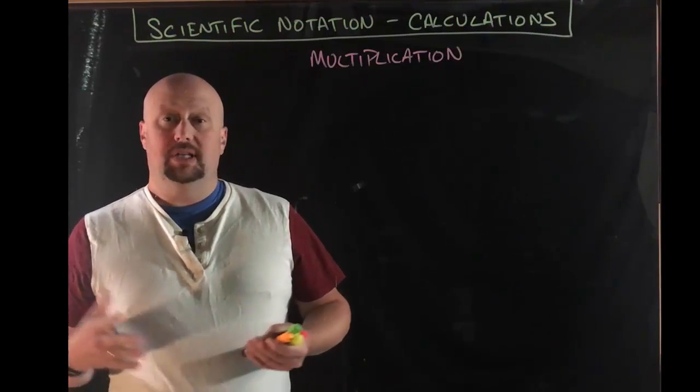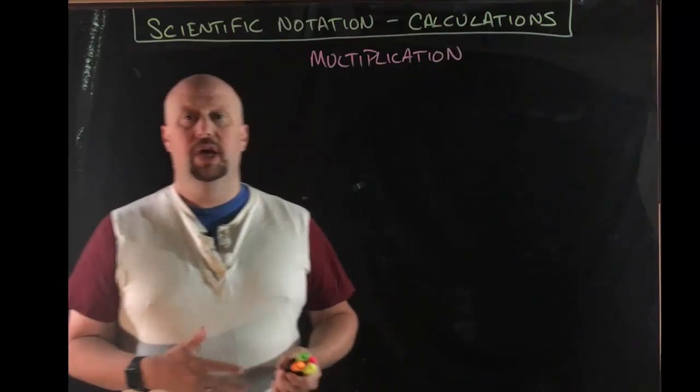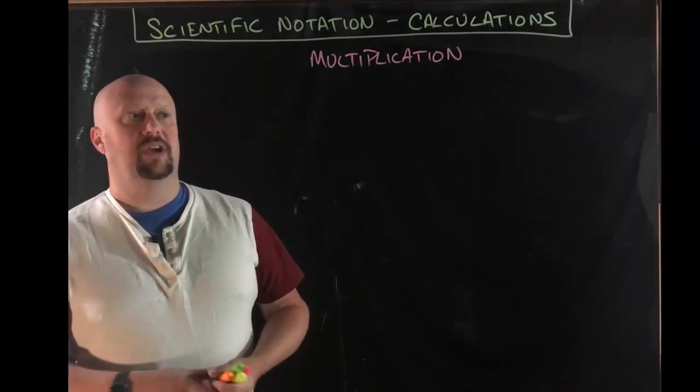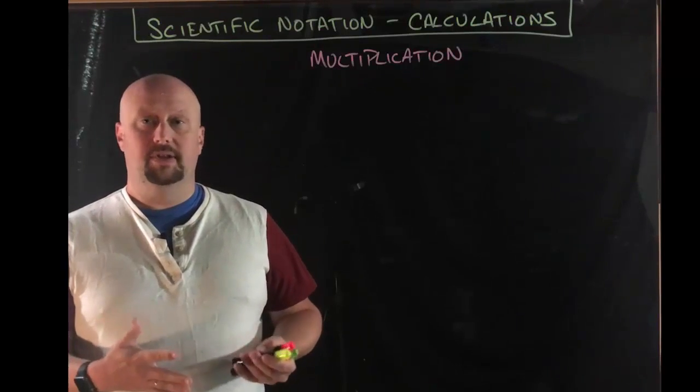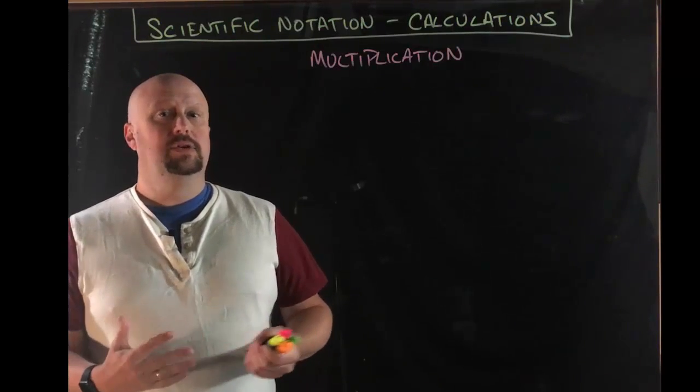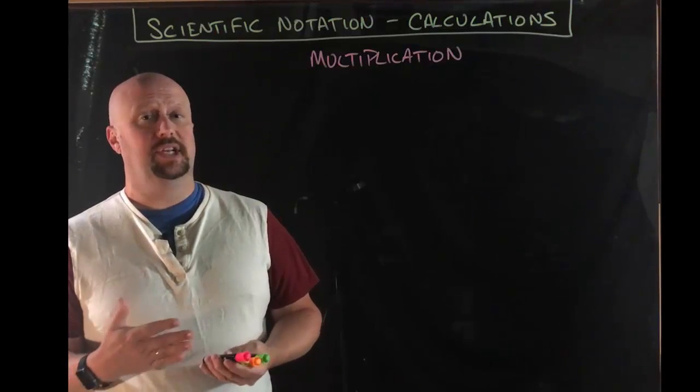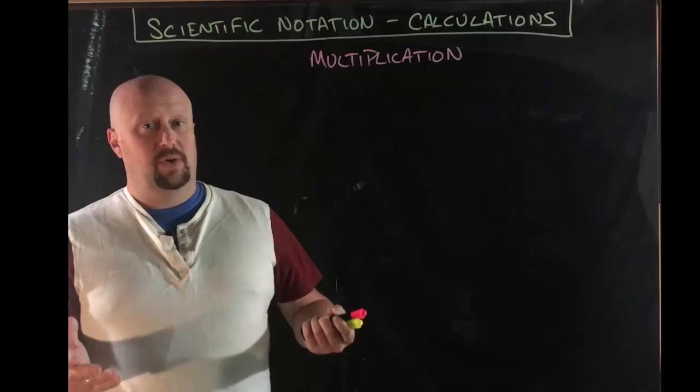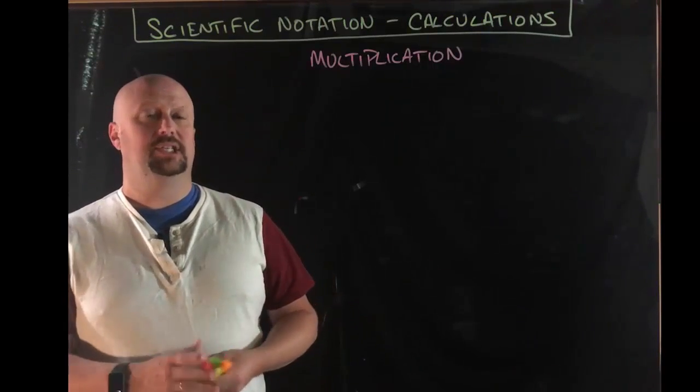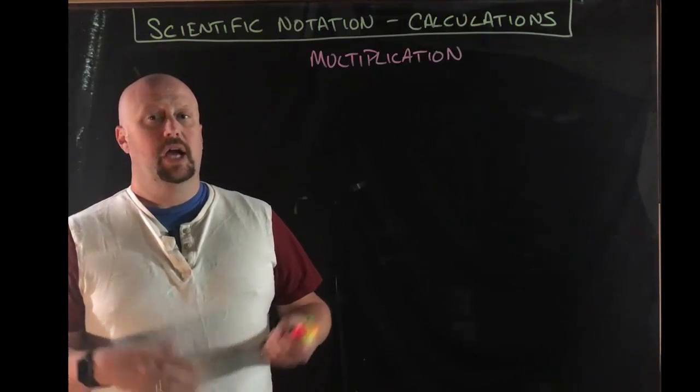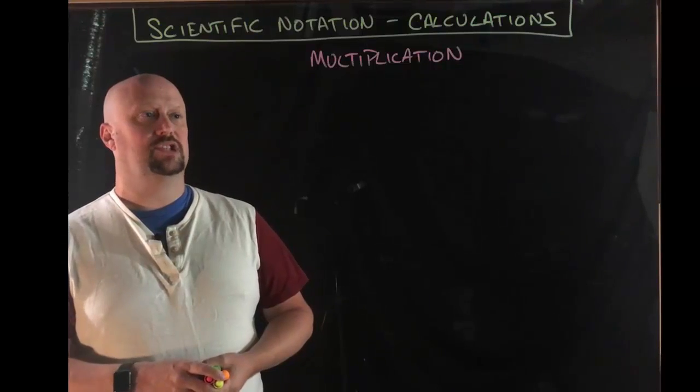All right, kiddos, in our last video we talked about how to put numbers into scientific notation and how to take them out of scientific notation. We're going to briefly cover in this video how to do calculations with numbers that are in scientific notation. Now, as I alluded to in the last video, what's much more likely is you're just going to punch things into your calculator and get the correct answer out that way. But there are cases where you won't have the calculator, and so I think it's important that you know how to do this for those situations.